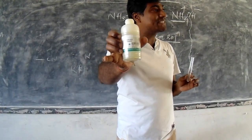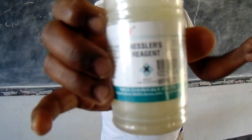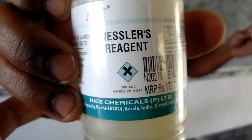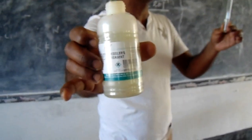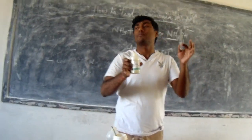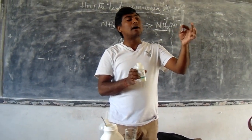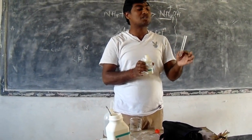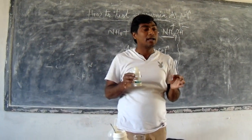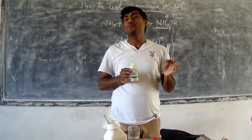Then we must add Nessler's reagent. When Nessler's reagent is added to the solution containing ammonia and sodium hydroxide, it should convert the colorless solution into brown. If it turns brown, we can confirm it contains ammonium ions — that is how we know we have ammonium.